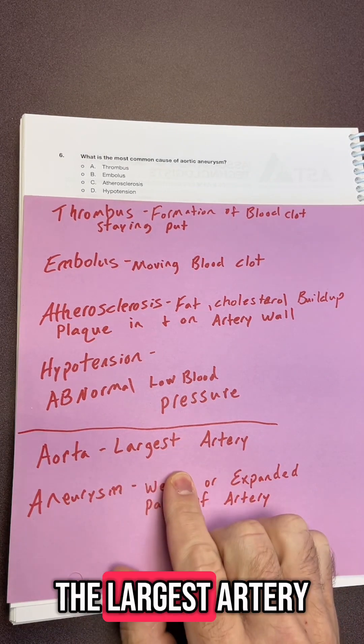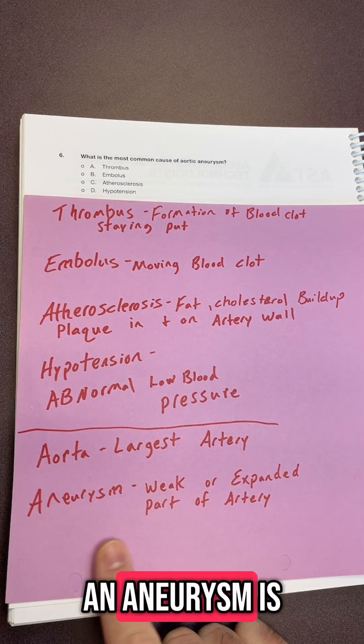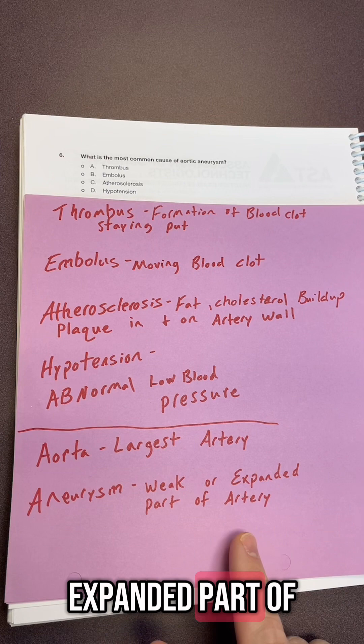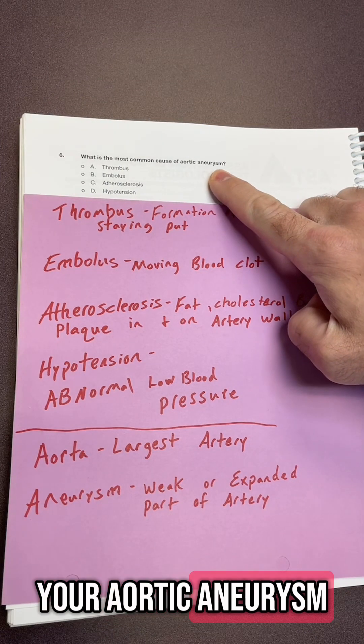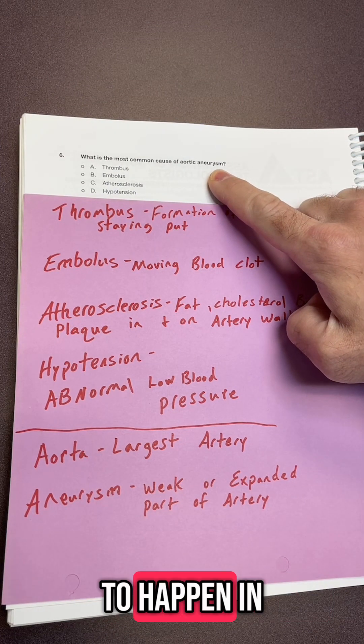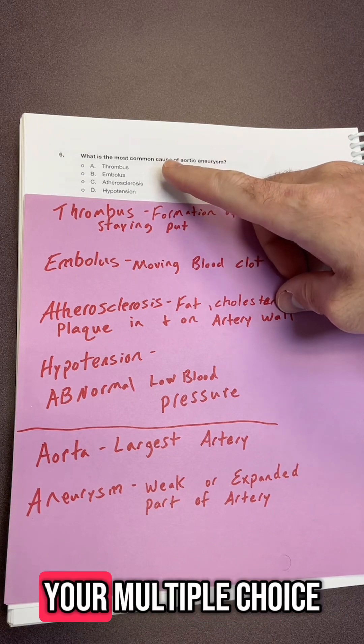Your aorta is the largest artery in your body and an aneurysm is a weak or expanded part of your artery. Your aortic aneurysm is most likely to happen in your abdomen. So what about your multiple choice?